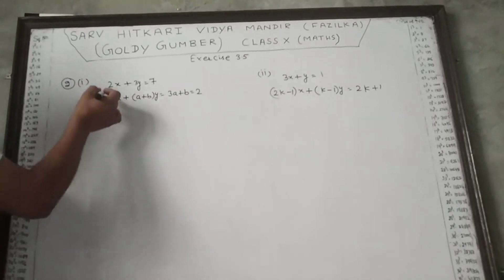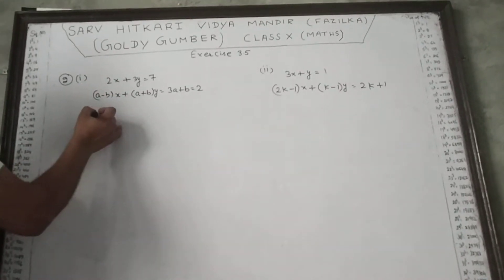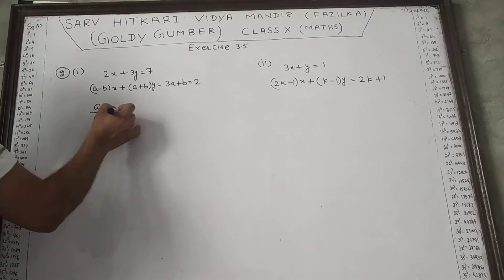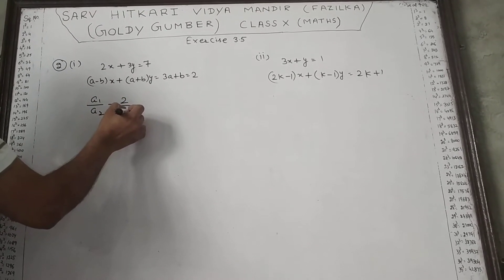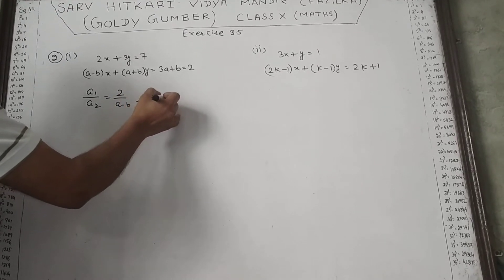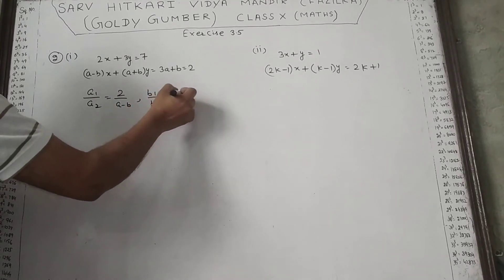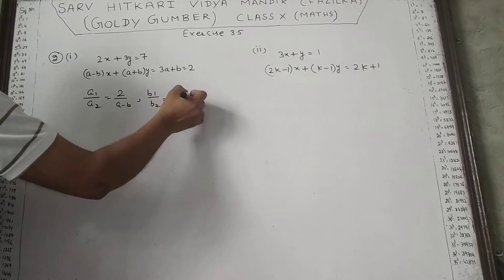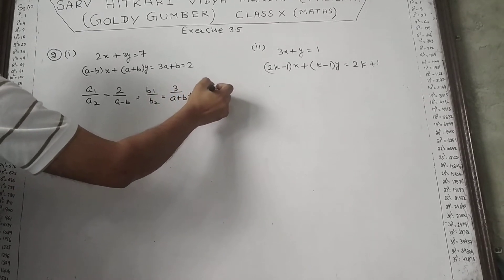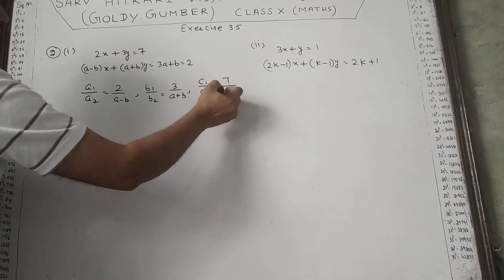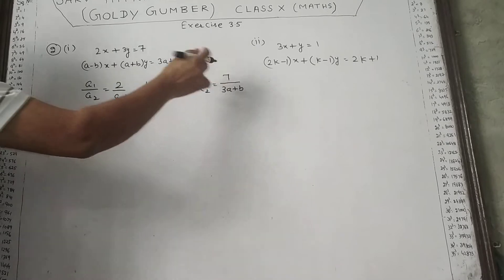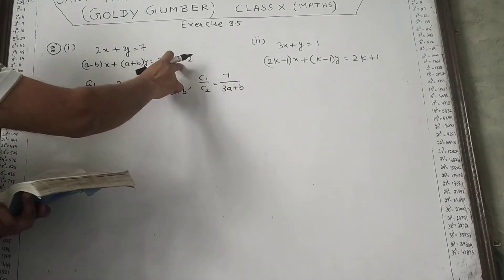First, we will see that a1 upon a2 is 2 upon (a minus b). b1 upon b2 equal to 3 upon (a plus b). c1 upon c2 equal to 7 upon 3a plus b minus 2.